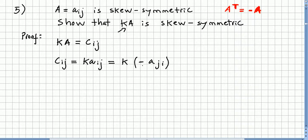Now, with the product by minus one, we can say minus k Aji, right? But this is nothing but minus Cji.